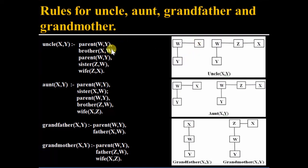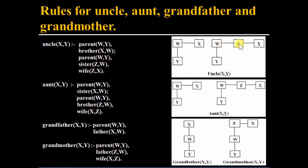Now we will define another rule using the OR operation — semicolon means OR. If W is the parent of Y, Z is the sister of W, and wife(Z,X) — meaning Z is the wife of X — then X will be the uncle of Y. So: uncle(X,Y) :- parent(W,Y), sister(Z,W), wife(Z,X).